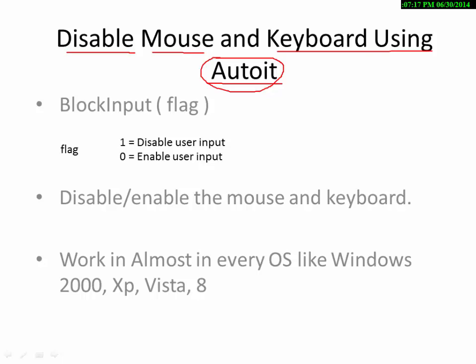Here we have a single built-in function called BlockInput, and it requires a flag. This flag consists of two values: one to disable user input, and zero to enable user input.